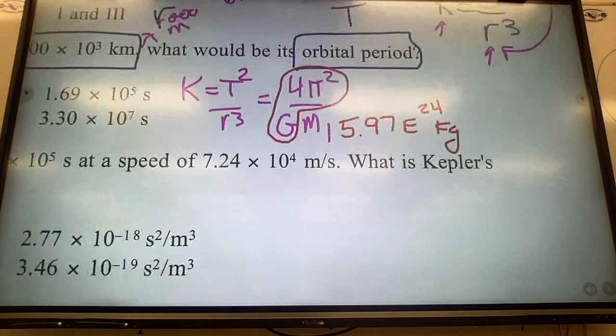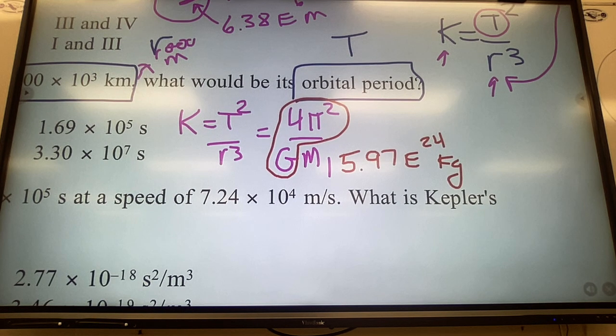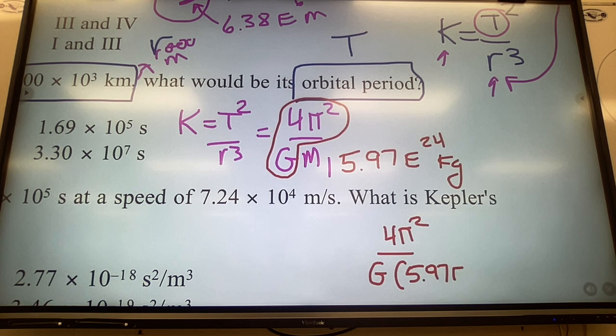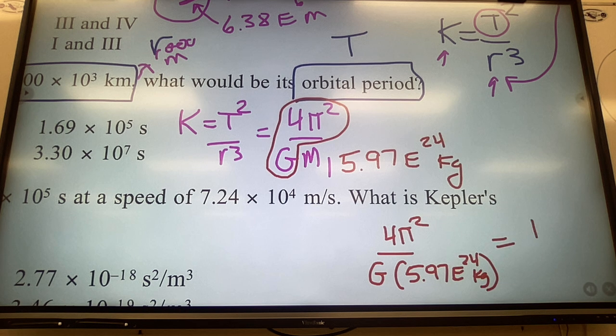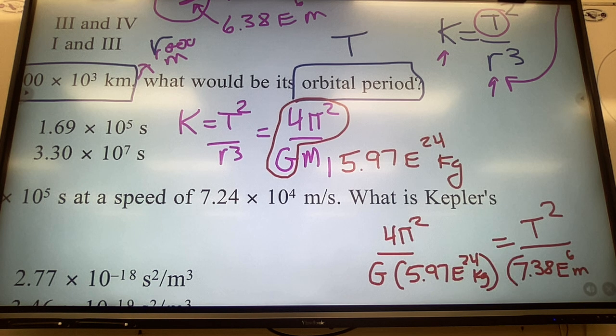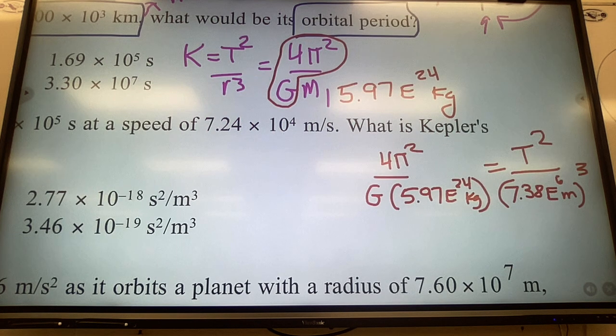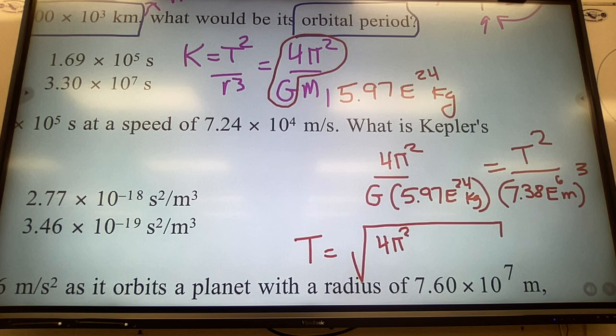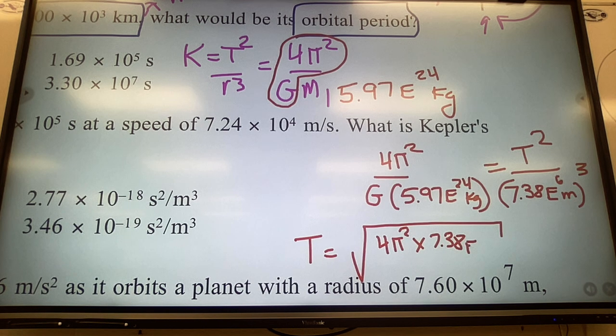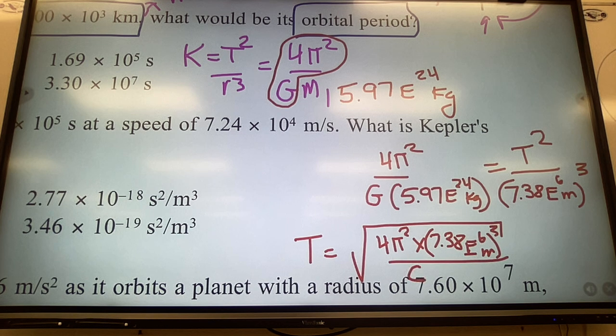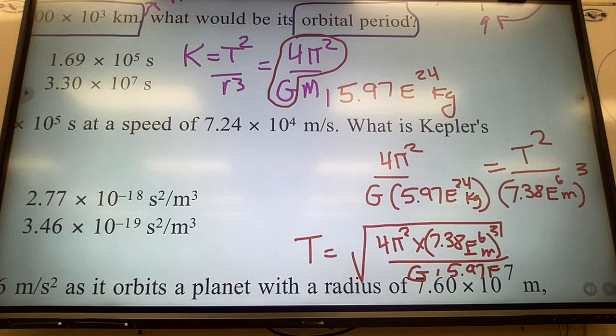Sorry I'm writing all over the place - I don't have a lot of space. But what that means is I can punch in 4π² over (G times 5.97×10²⁴ kg). That equals T² over the radius, 7.38×10⁶ meters, but that number is cubed.